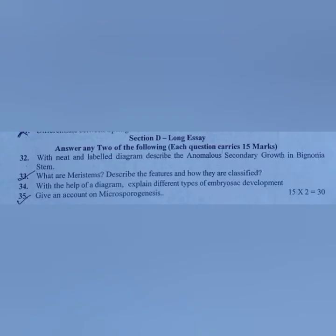Section D. Long essay. Answer any two of the following, each question carries 15 marks. 32. With neat and labeled diagram, describe the anomalous secondary growth in Bignonia stem. 33. What are meristems? Describe the features and how they are classified. 34. With the help of a diagram, explain different types of embryosac development. 35. Give an account on microsporogenesis. Thank you for watching.